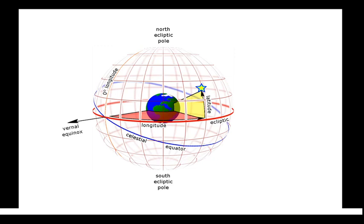So that's about the three celestial coordinate systems. First is the horizon system or alt-azimuth system, using coordinates altitude and azimuth. Second is the universal equatorial system using declination and right ascension. Third is the ecliptic system using celestial latitude and celestial longitude.